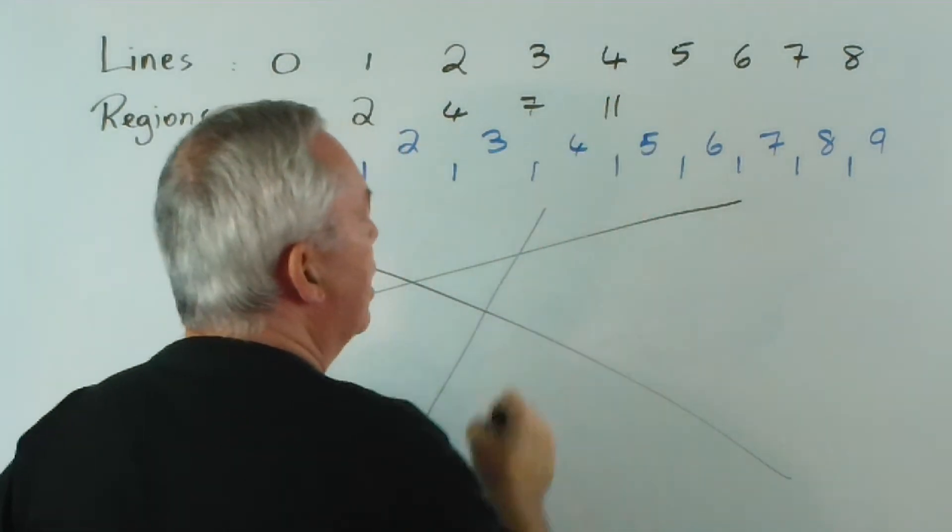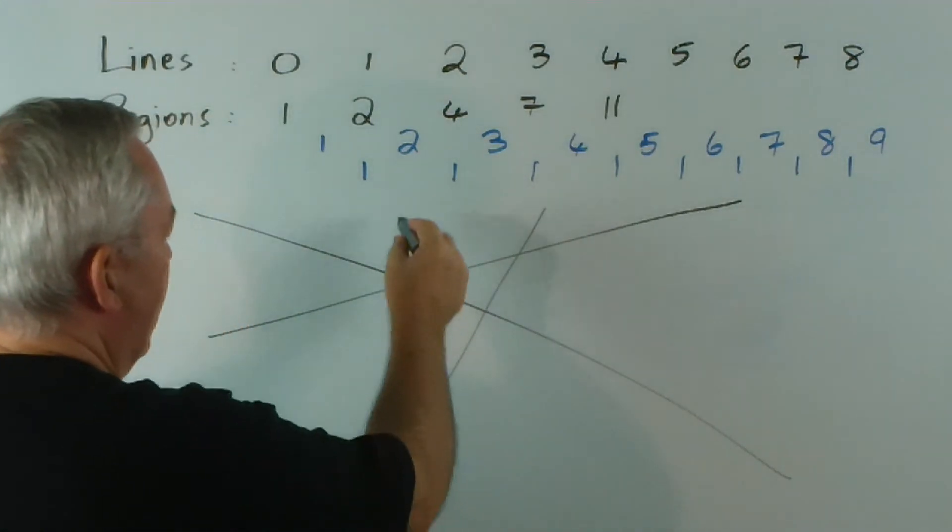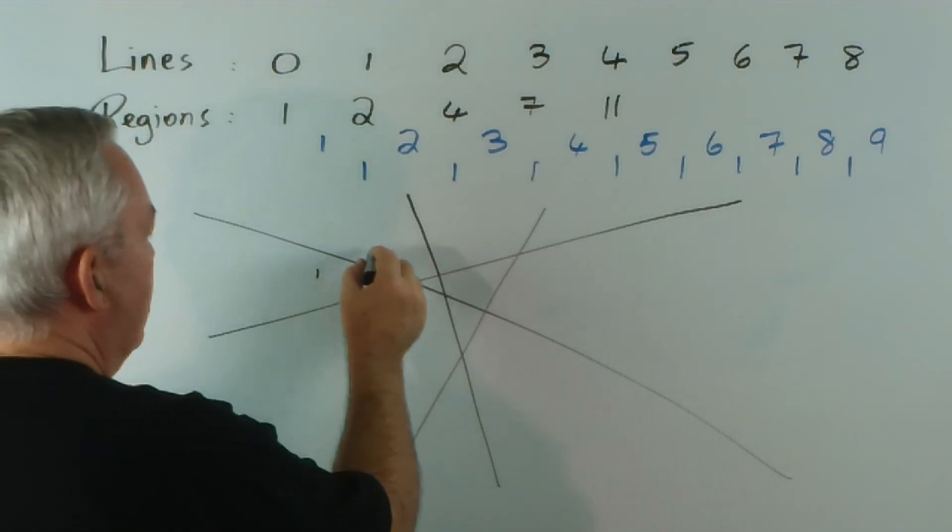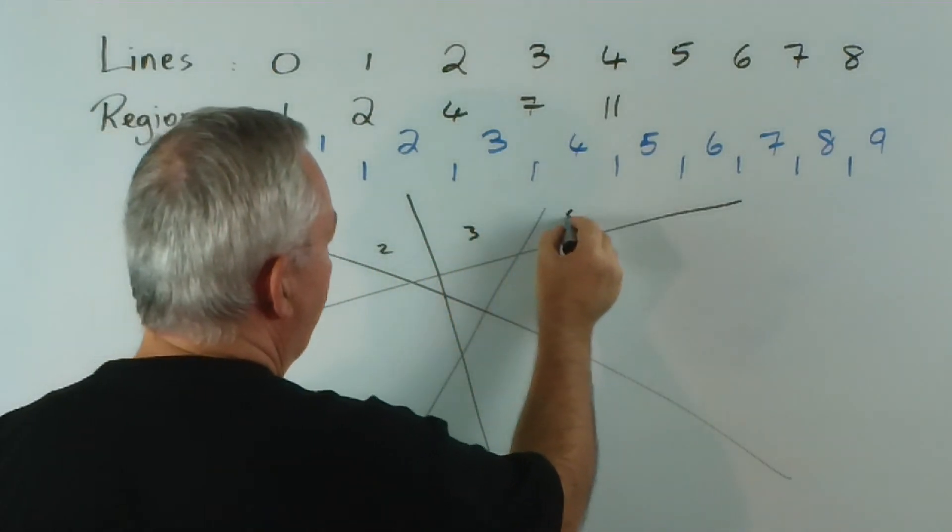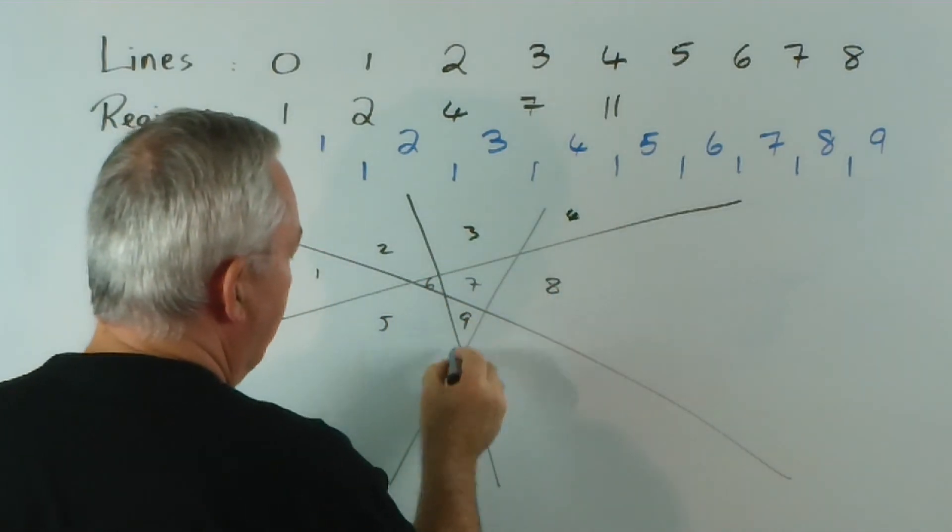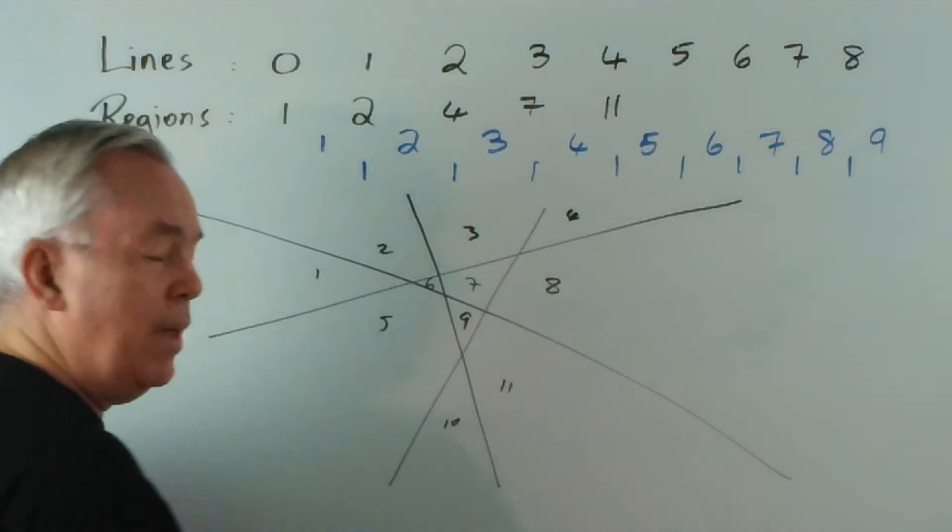Changing back to my black. If this is the gap between these two numbers, 7 plus 4 is 11. So, four lines must give me 11 regions. Let's try that. Here's a 4th line. 1, 2, 3, 4, 5, 6, 7, 8, 9, 10, 11. How about that?